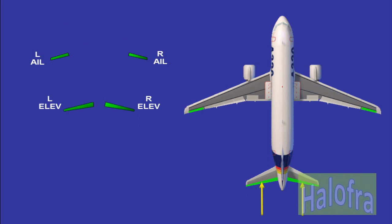Each elevator is actuated by two independent hydraulic servo controls. In normal operation, one servo control is active through the ELAC, with the SEC in backup, and the other is damped. In the event of total electrical control loss, the servo controls are automatically switched to a centering mode and will hold the surface in the neutral position. Surface position indication is displayed on the ECAM display unit.